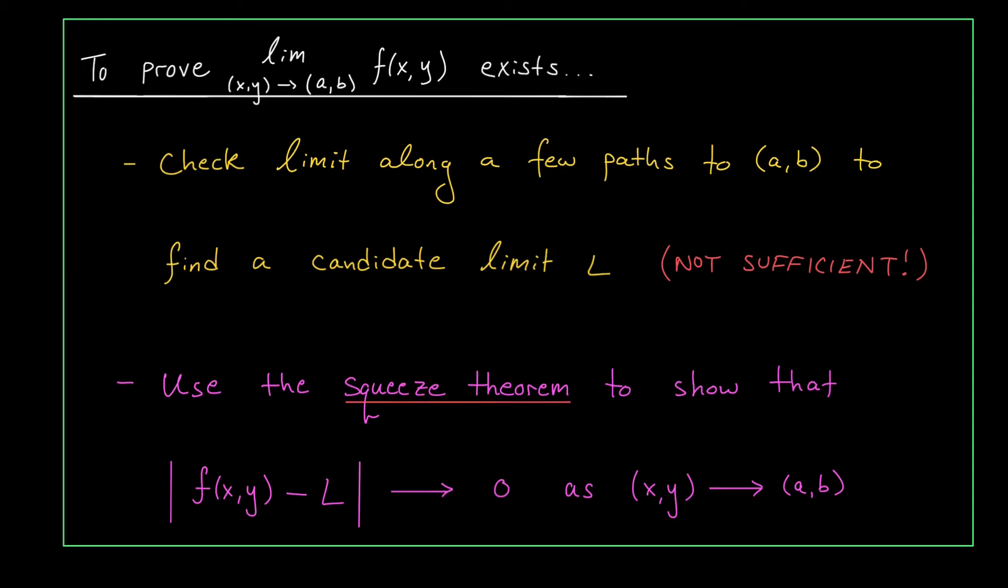Our central tool for proving that a limit exists is the squeeze theorem. Essentially, we try to show that the difference between our outputs and this candidate limit L must tend to zero as we get close to AB. This is easier said than done, but the general strategy is to find an expression that's a little bit larger than this that obviously tends to zero. We have a few tricks for accomplishing this goal, and you'll see some of them in the example video to follow. All in all, proving that a limit exists is tough and takes a fair bit of practice. Don't get discouraged if your squeeze theorem estimates don't work out on your first attempt.